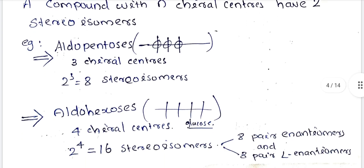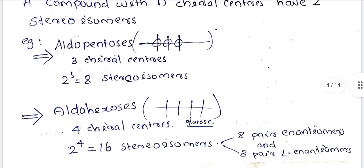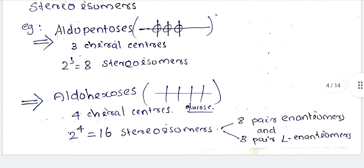This is aldohexose — this is glucose. How many chiral carbons are there? There are 4 chiral carbons. Therefore 2 raised to 4 equals 16 stereoisomers.